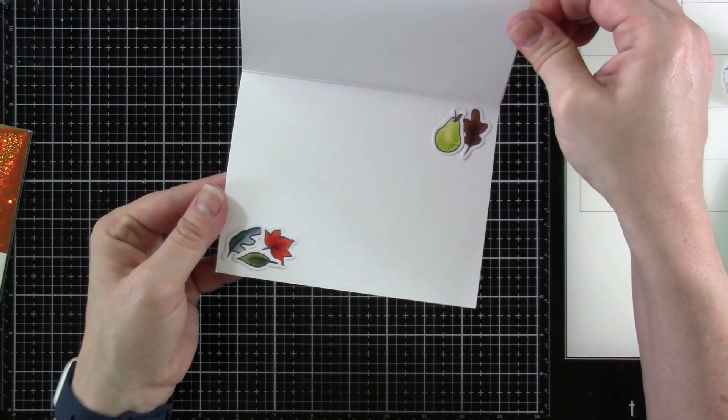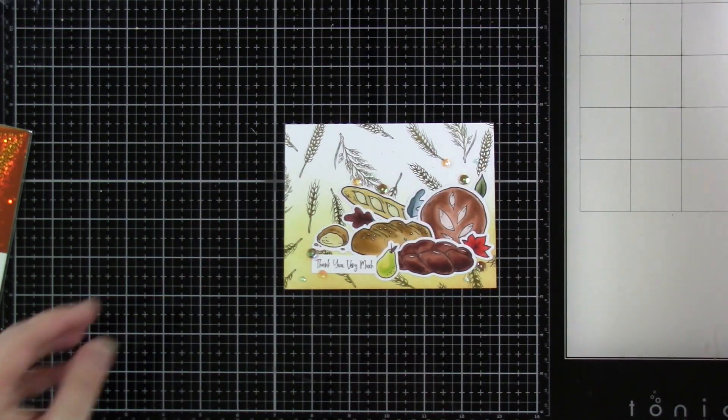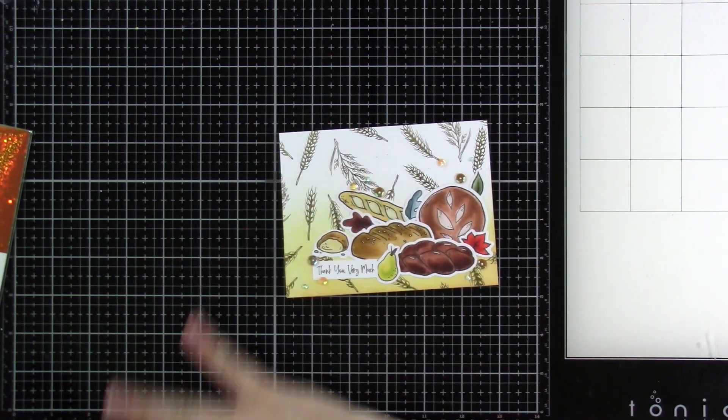Look at that gold foiling. It's stunning. And now we're going to take a look at the other four cards that I made just so that you have an idea. Just get some ideas on other things that you can do with this kit.